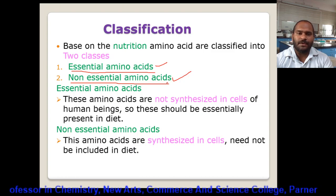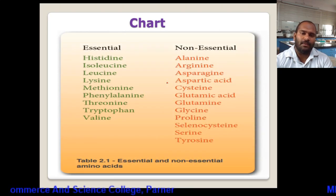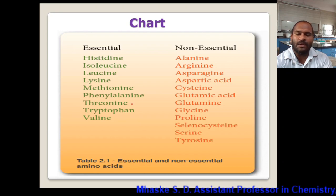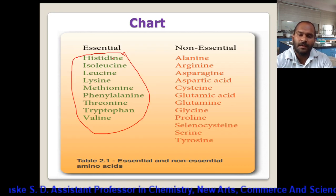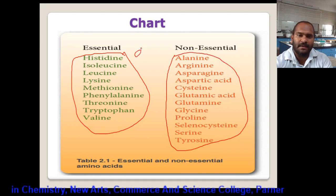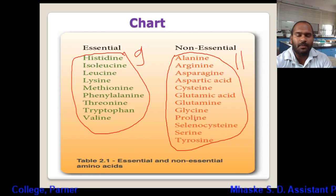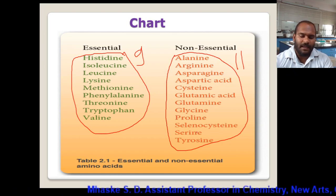Examples of essential amino acids include histidine, isoleucine, leucine, lysine, methionine, phenylalanine, tryptophan, valine, and threonine — nine in total, which the body cannot synthesize. The remaining 11 amino acids are non-essential: alanine, arginine, asparagine, aspartic acid, glutamic acid, glutamine, glycine, proline, and others.